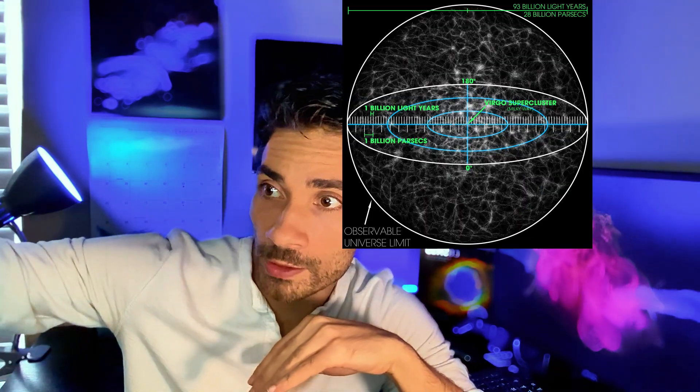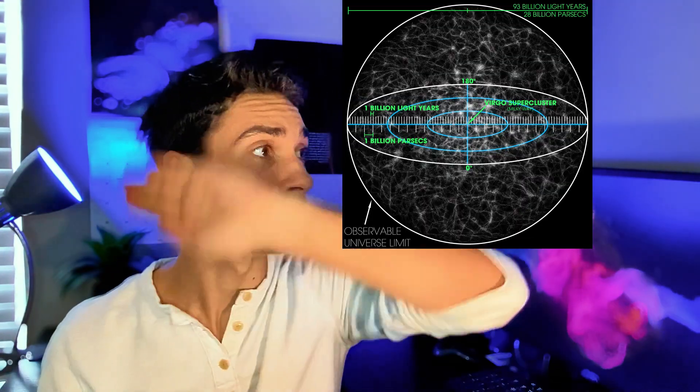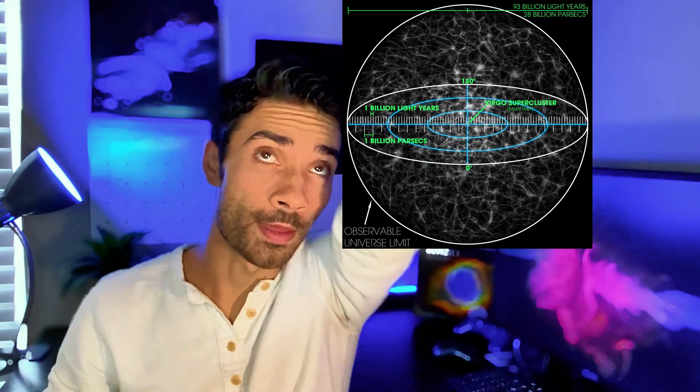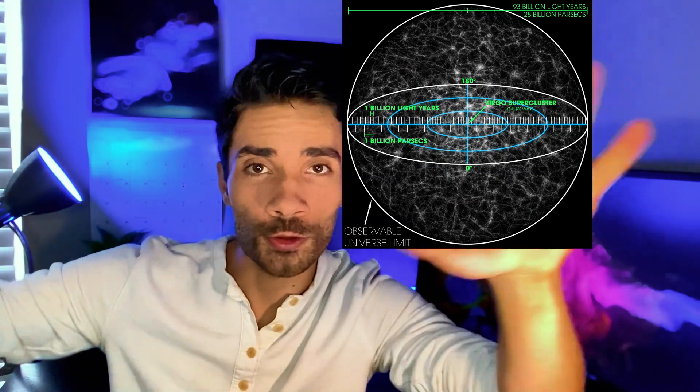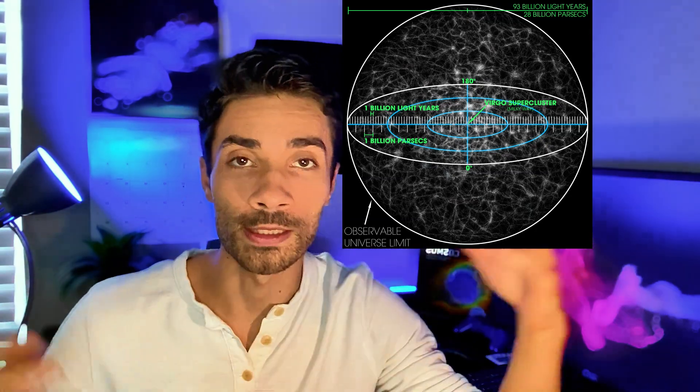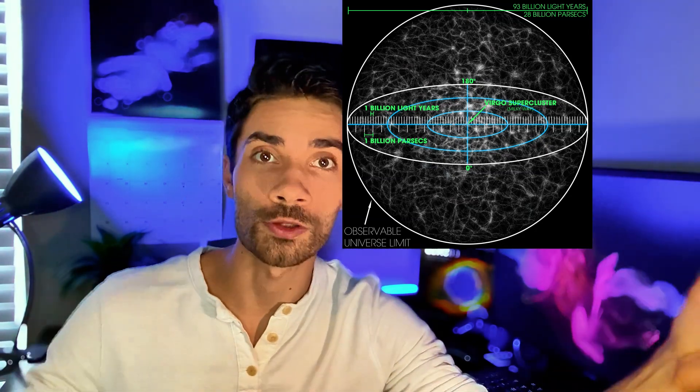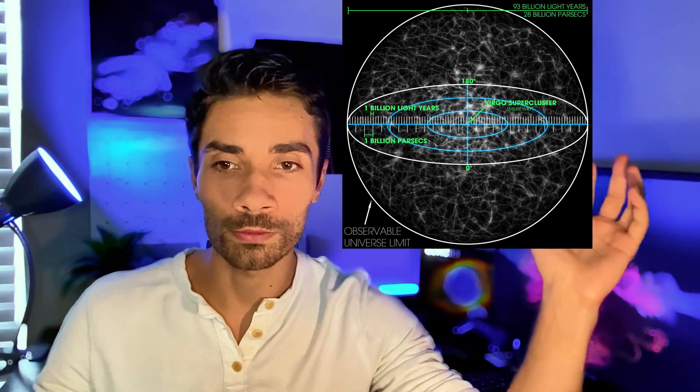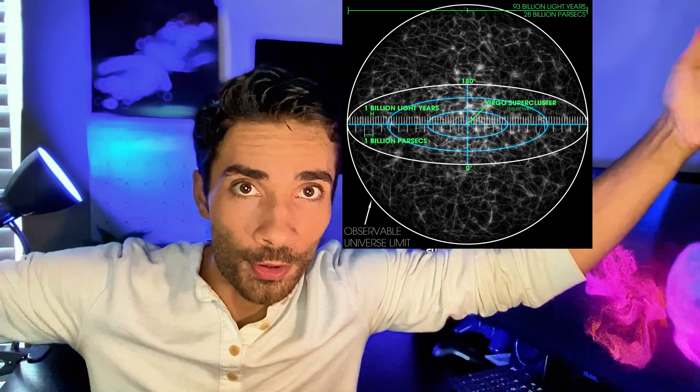If we look out into the universe, we see galaxies all around us — on every side, 360 degrees around us — stars and dust surrounding us. The diameter of the entire observable universe is about 93 billion light years. And just 100 years ago we discovered that the universe is expanding; it's getting larger.